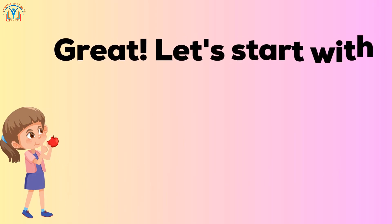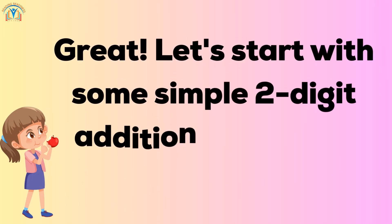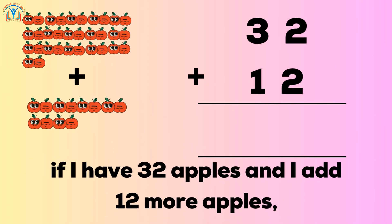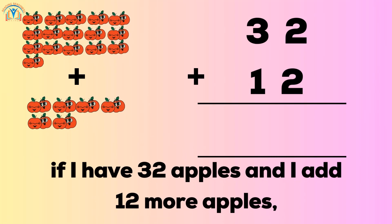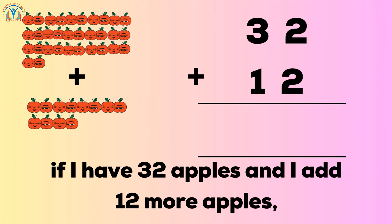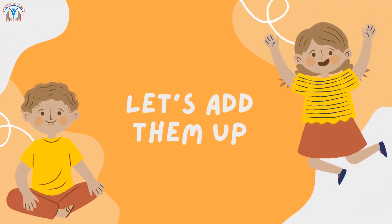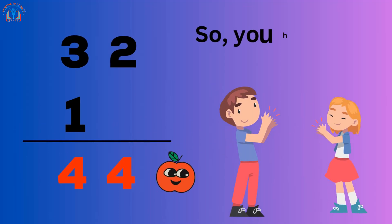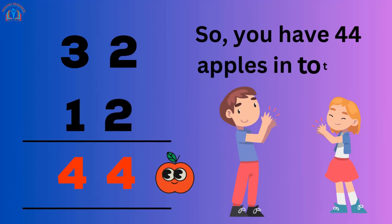Great. Let's start with some simple 2-digit addition problems. Here's an example. If I have 32 apples and I add 12 more apples, how many apples do I have in total? Let's add them up. 2 plus 2 is 4, and 3 plus 1 is 4. So, you have 44 apples in total.